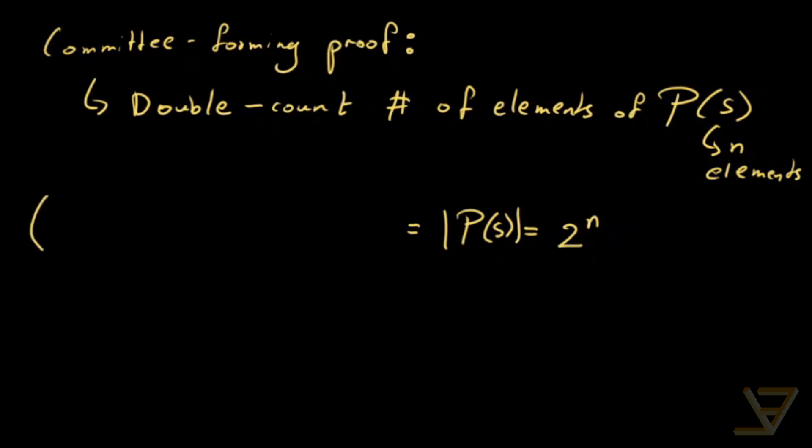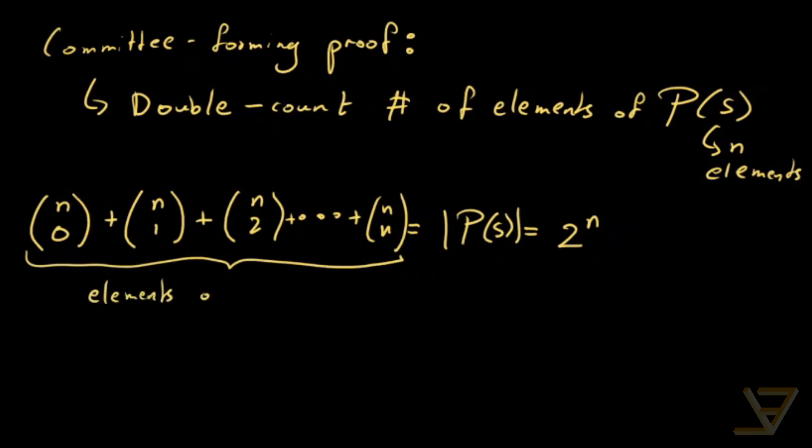If there are zero elements, then there are n choose 0 ways of choosing a zero element subset. If there's one element, then there's n choose 1 ways of choosing a one element subset. Then we have n choose 2, and we keep going like this until we have n choose n. And these elements are precisely the elements of row n of Pascal's triangle.